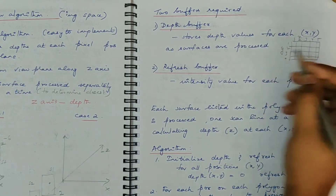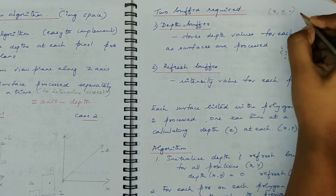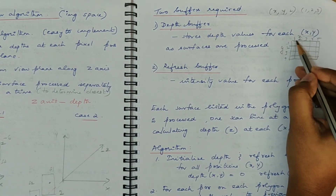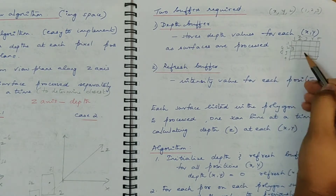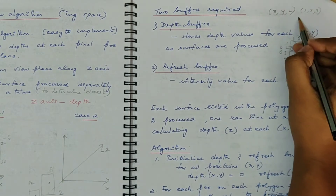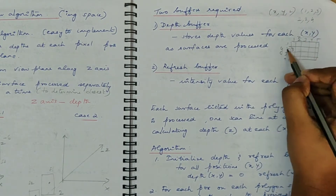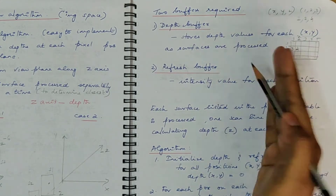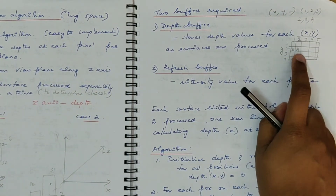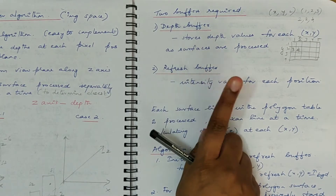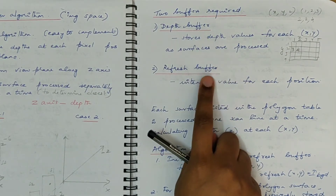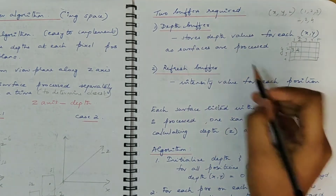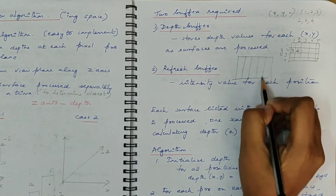Similarly, at pixel position (2,2), if the depth value is 4, then Z equals 4 is stored. This buffer stores the depth so we can compare the depth for each surface. The second buffer is the refresh buffer, which stores the intensity value — the RGB component value — for each pixel position. At pixel position (1,2), what is the intensity value will be stored in that cell of the refresh buffer.